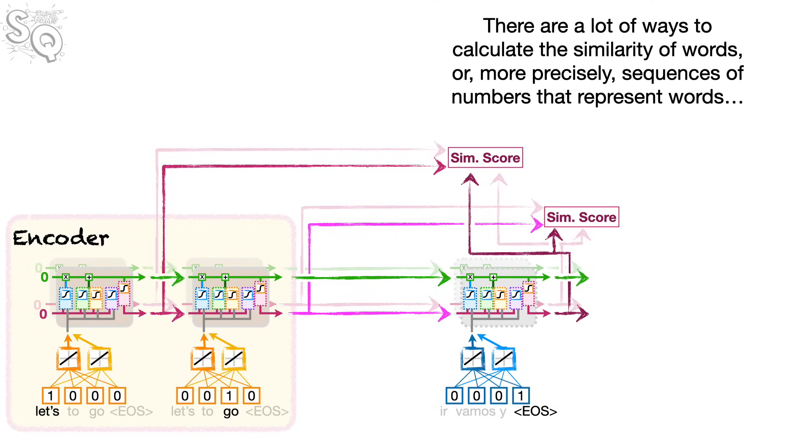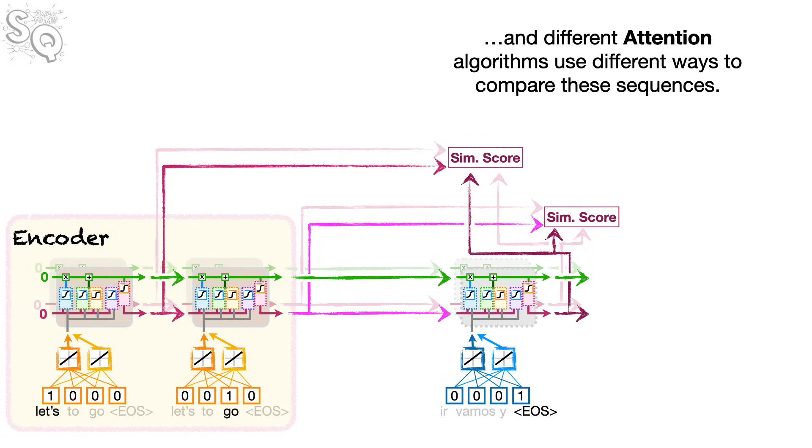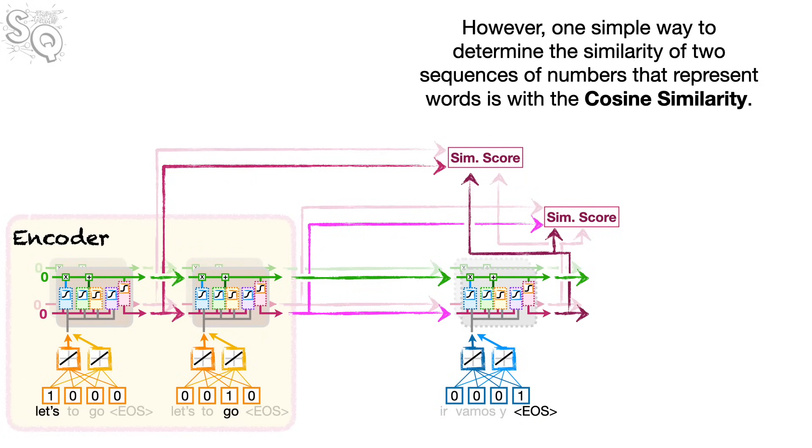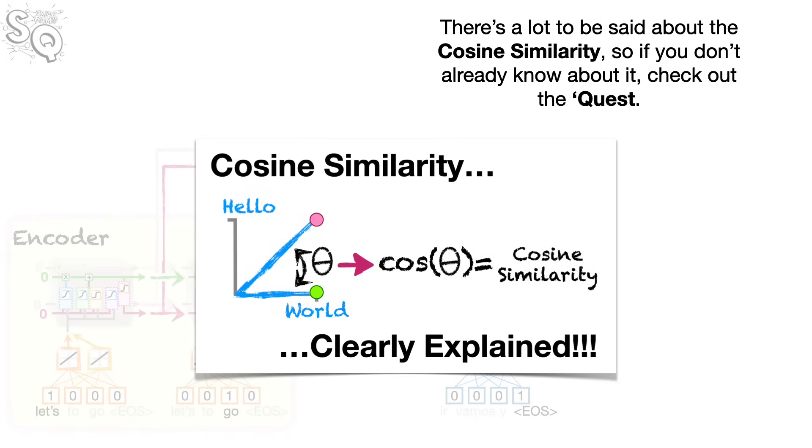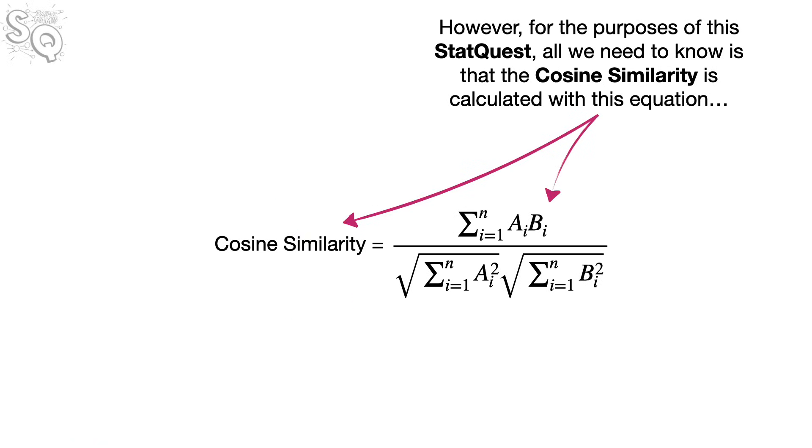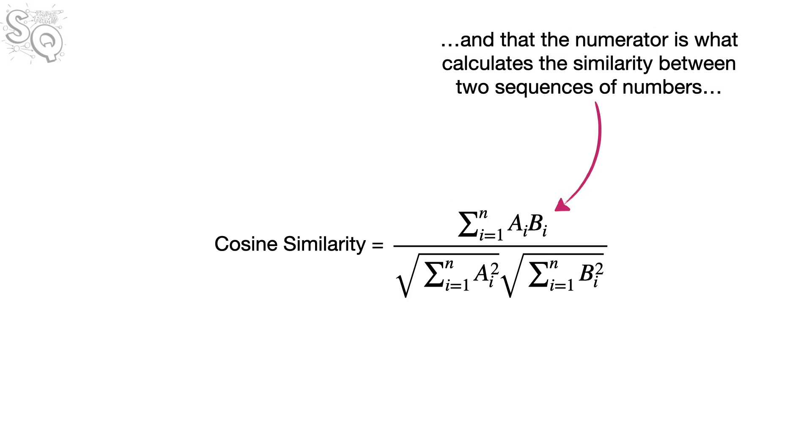There are a lot of ways to calculate the similarity of words, or, more precisely, sequences of numbers that represent words. And different attention algorithms use different ways to compare these sequences. However, one simple way to determine the similarity of two sequences of numbers that represent words is with the cosine similarity. There's a lot to be said about the cosine similarity, so if you don't already know about it, check out the quest. However, for the purposes of this StatQuest, all we need to know is that the cosine similarity is calculated with this equation. And that the numerator is what calculates the similarity between two sequences of numbers. And that the denominator scales that value to be between negative 1 and 1.